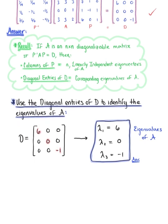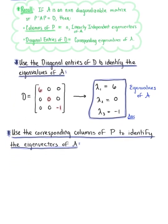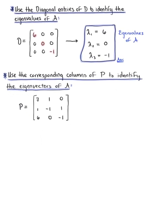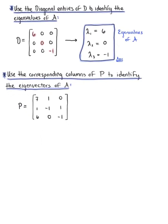Now we use the corresponding columns of matrix P to identify the eigenvectors of matrix A. The first column vector represents eigenvector p₁, the second column vector represents eigenvector p₂, and the third column vector represents eigenvector p₃.